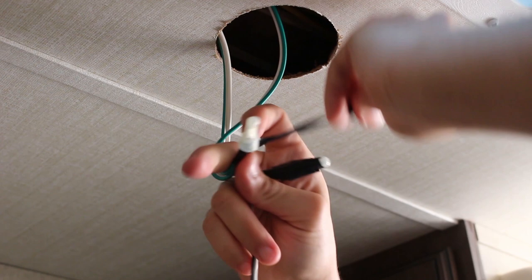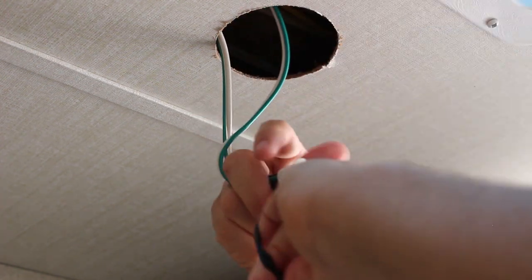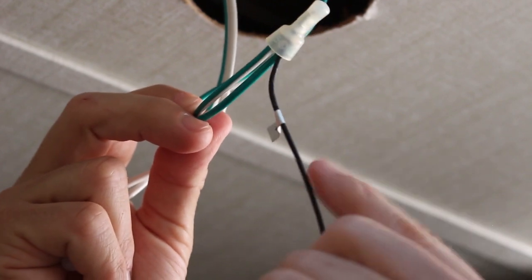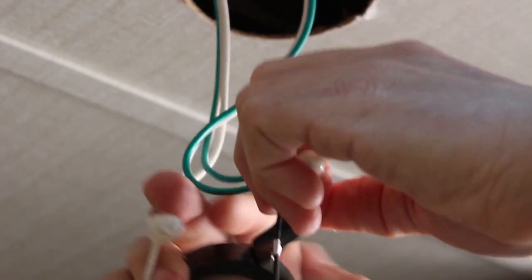The process is slightly easier when only having to remove screws. Make sure to note the correct connection. I like to mark the location of the black wire connection using electrical tape.